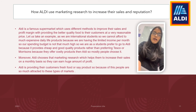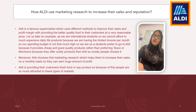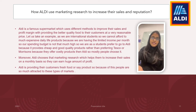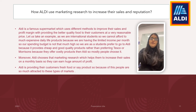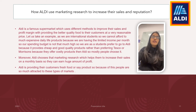So how does LD use Marketing Research to increase their sales and reputation? LD is a famous supermarket which uses different methods to improve their sales and profit margins by providing better quality food to their customers at a very reasonable price. For example, as international students we cannot afford too many expensive products of daily life because we have a limited income per month and our spending budget is not that high. So we prefer to go to LD because it provides cheap and good quality products rather than Tesco or Morrison's, which have higher prices. So we will choose LD over Morrison's as well as Tesco.